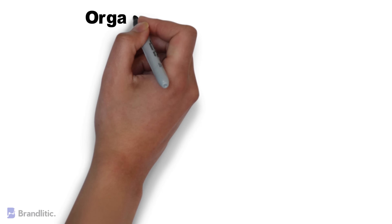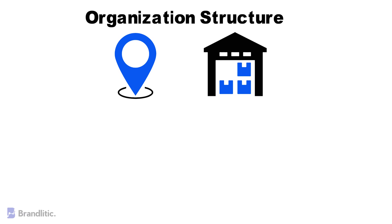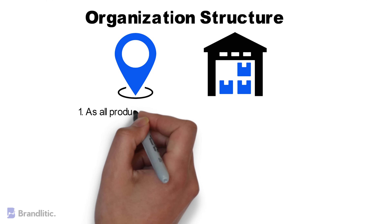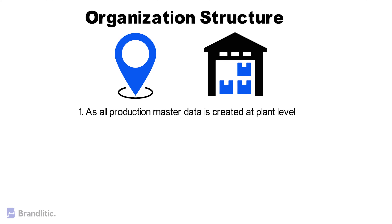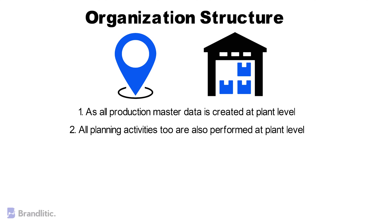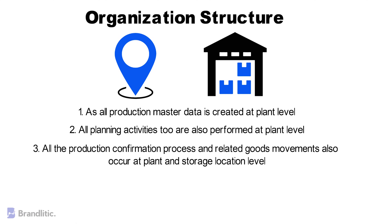Let's discuss the organization structure in SAP PP. In any live production planning module, the location of manufacturing plants and storage within the plants should be available in the system. This is important because: 1. All production master data is created at the plant level. 2. All planning activities are also performed at the plant level. 3. All production confirmation processes and related goods movements also occur at the plant and storage location level.